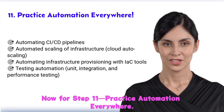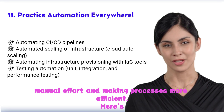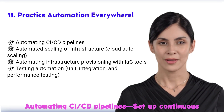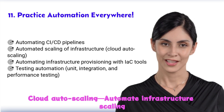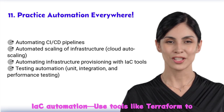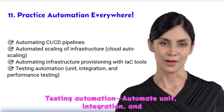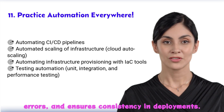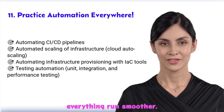Step 11: practice automation everywhere. Automation is the backbone of DevOps, reducing manual effort and making processes more efficient. Automate CI/CD pipelines with tools like Jenkins, set up cloud auto-scaling to adjust infrastructure based on demand, and use Terraform to automate infrastructure provisioning. Also automate unit, integration, and performance tests to catch bugs early. Automation increases productivity, minimizes human errors, and ensures consistency in deployments.